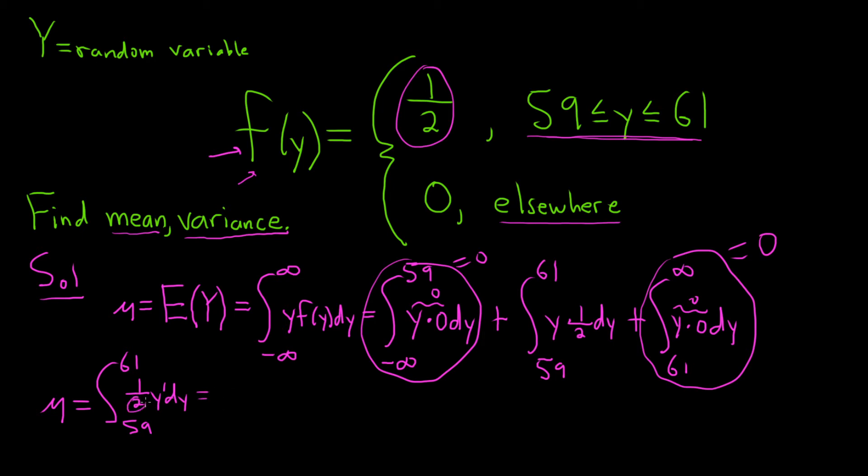But there's a 1 half here, and 2 times 2 is 4, so it's really just y squared over 4. We're going from 59 to 61. So this is equal to 1 fourth.